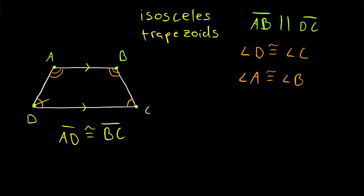Another cool thing about isosceles trapezoids is that their diagonals are also congruent. So the diagonal AC is congruent to the diagonal BD.